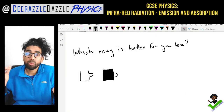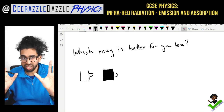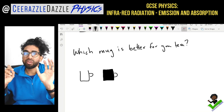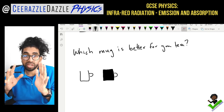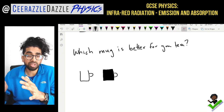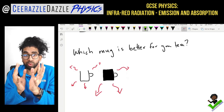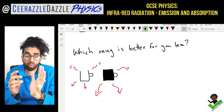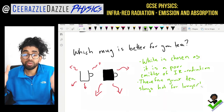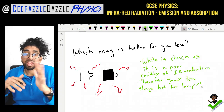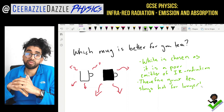What about which mug is better for your tea? We've got two mugs — one white and one black — same volume, same size, same shape. You want your tea to remain as hot as possible for the longest period of time. You choose the white one because it emits the least amount of heat energy. White is a poor emitter of infrared radiation, and therefore your tea stays hot for longer.